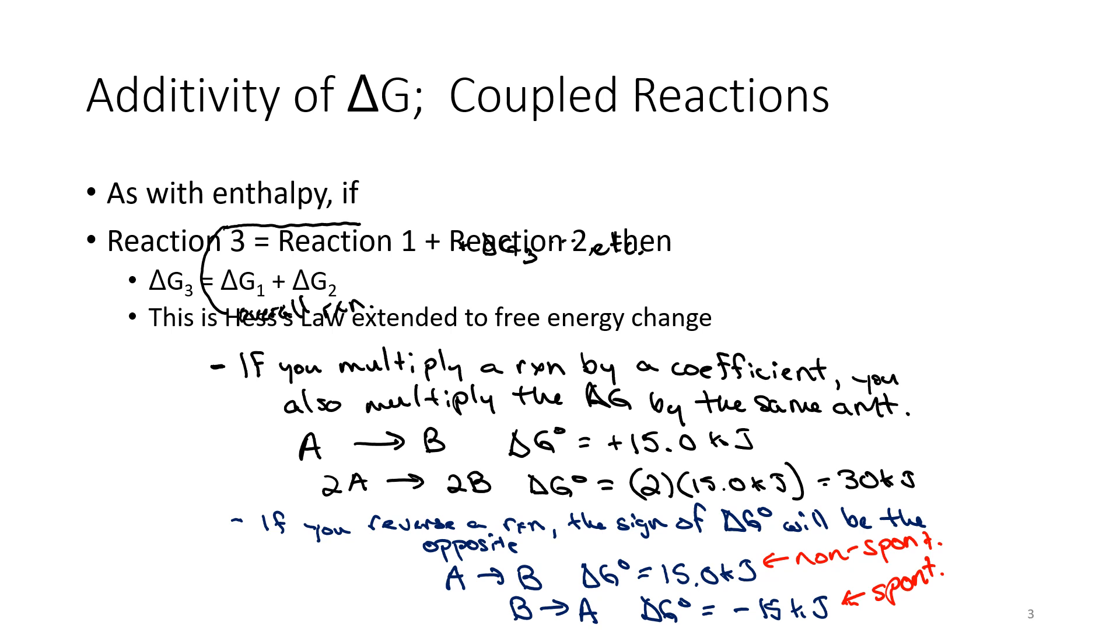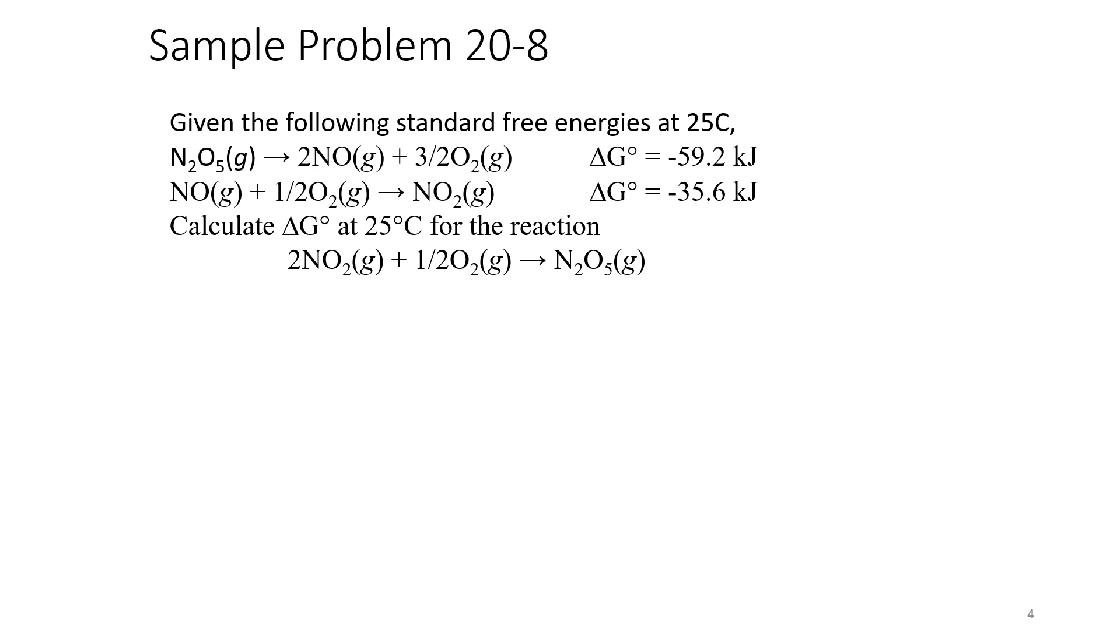Because I reversed it, I switched the sign and all of a sudden we've made a spontaneous reaction. So our final sample problem is sample problem 20-8. It says, given the following standard free energies at 25 degrees Celsius, we have N₂O₅ decomposing into two NOs and three halves of an oxygen. We're given our Gibbs standard free energy change as negative 59.2 kilojoules for that. I want to calculate the delta G naught at 25°C for a coupled reaction. I've got to manipulate these two reactions so I end up with the overall reaction that is shown here.